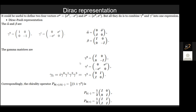Gamma-0 would be beta, and gamma-5 — though written similarly — is basically i times the product of the four gamma vectors. Gamma-5 tells us whether a particle is left-handed or right-handed: that's chirality. If a particle is moving along a direction and rotating clockwise, it would be right-handed; if rotating anti-clockwise, it would be left-handed. So gamma-5 is really important.